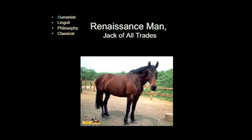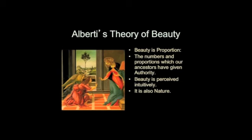Alberti was a Renaissance man: humanist, linguist, philosopher, classical thinker. It's also said he could jump over a horse — standing, with no running start. In theorizing the world of visual and built things, Alberti has a theory of beauty. He suggests that beauty is proportion, and the numbers and proportions given by the ancients confer authority. Beauty is perceived intuitively — a neoplatonic idea. There's nothing rational about beauty; when you see it, you know it because it's a glimpse of God. And you can also see beauty in nature.